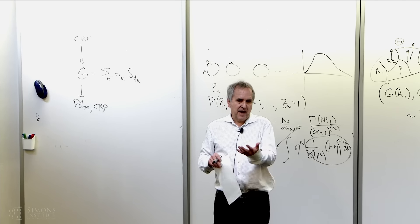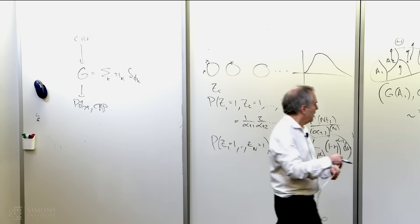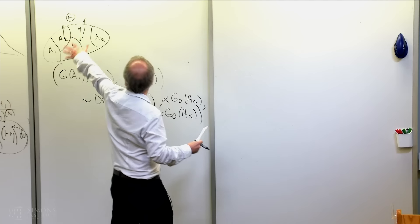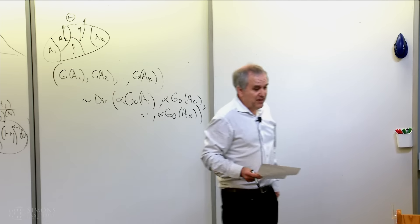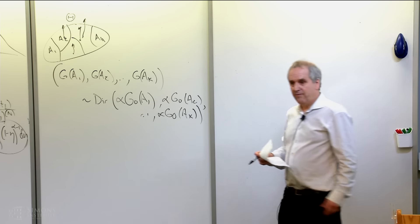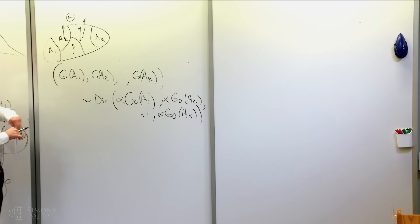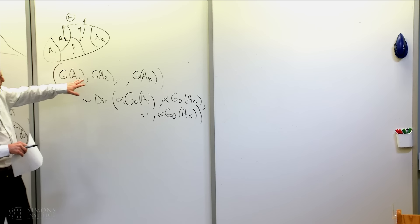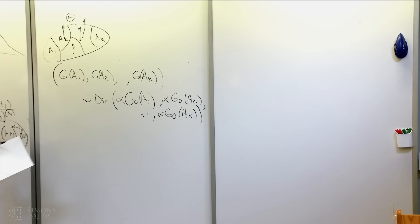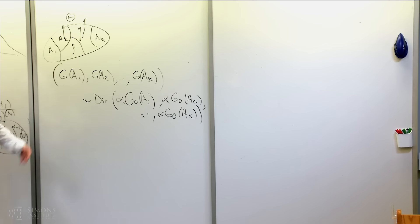Take independent gammas, sum them up, divide — you get something that sums to one, and that is the Dirichlet. So we might imagine, on a general space, defining an object called a gamma process which has gamma marginals. If I look at H(A_1), H(A_2), …, I get a bunch of independent gammas. If I can do that for any choice of A's, then I've defined a gamma process, and then when I divide, I will get a Dirichlet process.